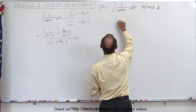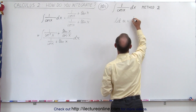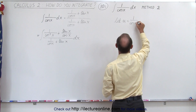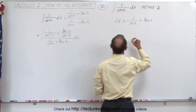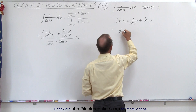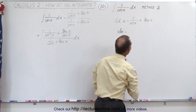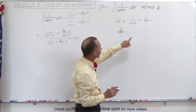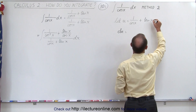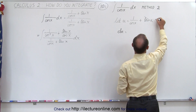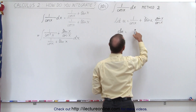That didn't seem to help very much. But if we let u equal the denominator, which is 1 over the cosine of x plus the tangent of x, then we can find du. du will be equal to the differential of each term, so we're going to use the quotient rule here. The tangent of x we can replace by the sine of x divided by the cosine of x.